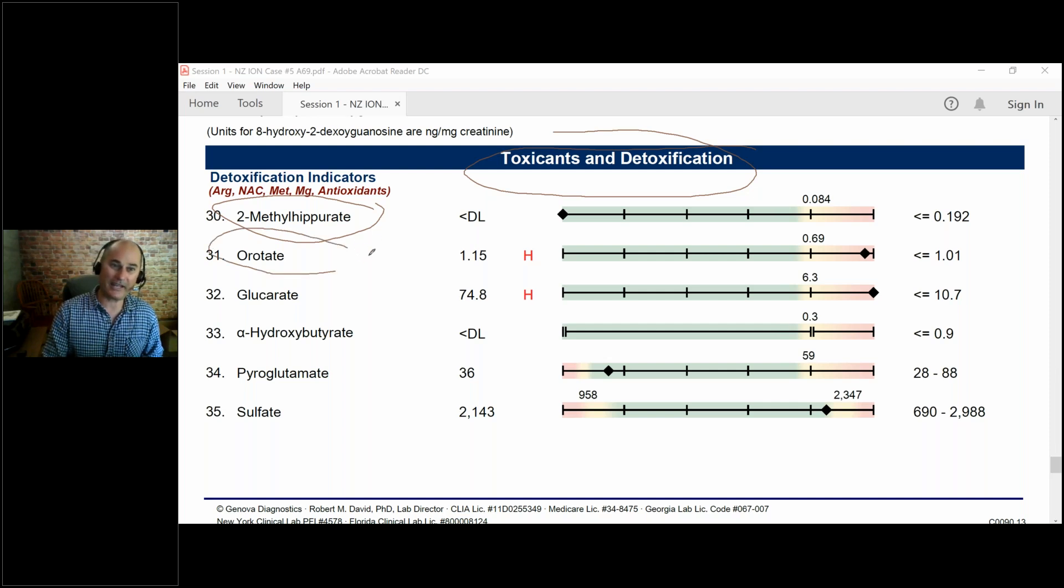Orate has to do with exposure to ammonia, which is bad for you—you've probably heard of ammonia. Glucarate has to do with phase one and phase two detoxification. It looks at how we're getting rid of things like prescription drugs as well as chemical toxins. Then these three markers here—hydroxybutyrate, alpha-hydroxybutyrate, pyroglutamate, and sulfate—all look at a chemical compound called glutathione. Glutathione is the master detoxifier, so very important.